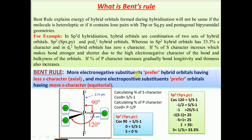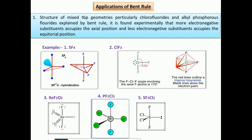Bent's rule states: more electronegative substituents always prefer hybrid orbitals having less s-character, and more electropositive substituents always prefer hybrid orbitals having more s-character. This is why chlorine, being more electronegative, tries to occupy the axial position (less s-character), while less electronegative atoms occupy the trigonal planar equatorial position, which has greater s-character.